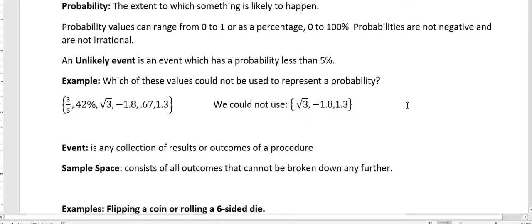So we just always want to look at those probabilities as values between zero and one. In general, when we look at probabilities, we have an event. An event is any collection of results or outcomes of a procedure. And the sample space is all the possible outcomes that can't be broken down any further.